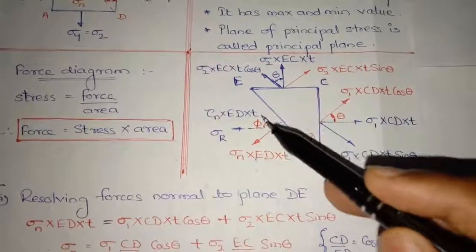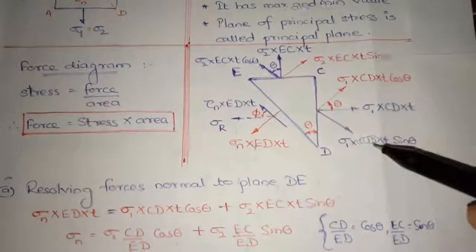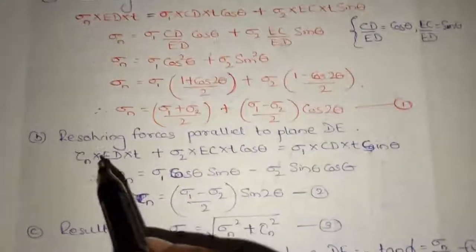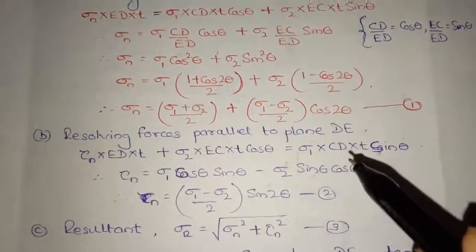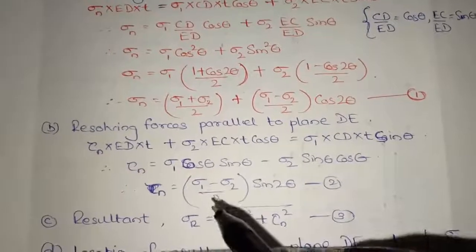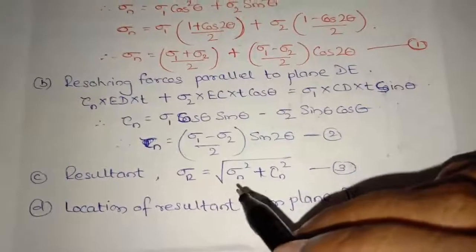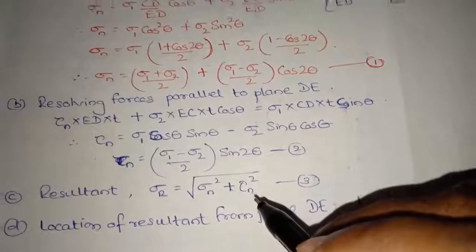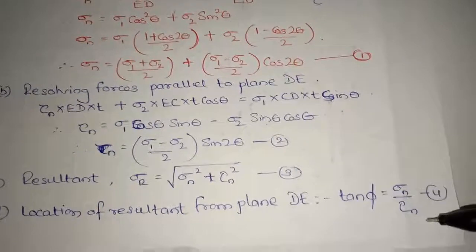Now resolving forces parallel to DE: tau n times ED times t plus sigma 2 times EC times t times cos theta equals sigma 1 times CD times t times sin theta. Solving this gives the equation for tau n. The resultant is given as the square root of sigma n squared plus tau n squared. The location of the resultant from plane DE is given by tan phi equals sigma n divided by tau n.